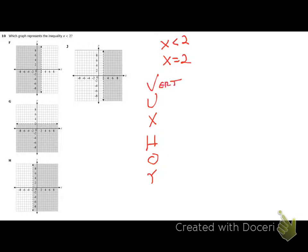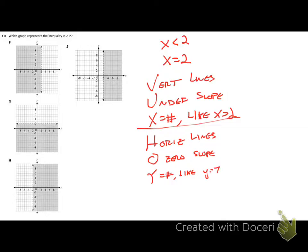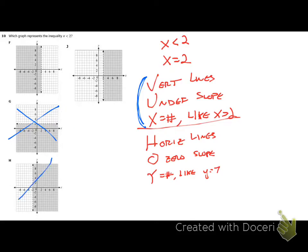VUXHOI tells us: Vertical lines have an Undefined slope and their equations are X equals a number — like x = 2. Horizontal lines have a zero (O) slope and their equations are Y equals a number — like y = 7. Since we have x = 2, that's x equals a number, so this is a vertical line. That means we can already eliminate answer choice G, which shows a horizontal line.